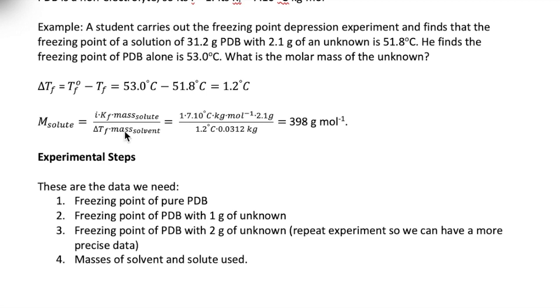Then plugging the numbers into the equation with i equals 1, Kf equals 7.1, and mass of solute equals 2.1, divided by ΔTf of 1.2 degrees Celsius and mass of solvent in kilogram, which is 0.0312, we end up getting 398 grams per mol as the molar mass of the solute.